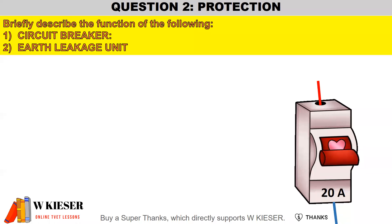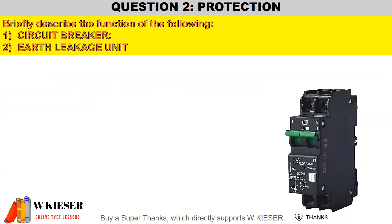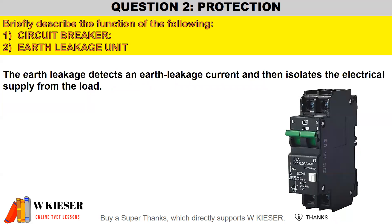In question two for protection, we need to briefly describe the function of the following protective devices: the circuit breaker and the earth leakage unit. The circuit breaker automatically disconnects a circuit to stop the flow of current when the rated tripping value of the breaker is exceeded. The earth leakage unit detects an earth leakage current and then isolates the electrical supply from the load.